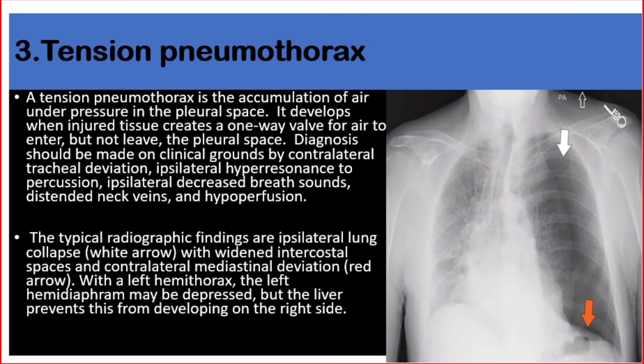Number three: tension pneumothorax. A tension pneumothorax is the accumulation of air under pressure in the pleural space. It develops when injured tissue creates a one-way valve for air to enter but not leave the pleural space. Diagnosis should be made on clinical grounds by contralateral tracheal deviation, ipsilateral hyper-resonance to percussion, ipsilateral decreased breath sounds, distended neck veins, and hypoperfusion. The typical radiographic findings are ipsilateral lung collapse with widening intercostal spaces and contralateral mediastinal deviation.